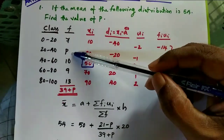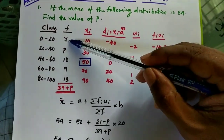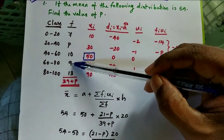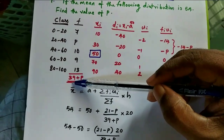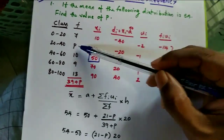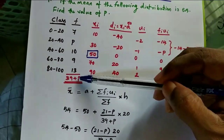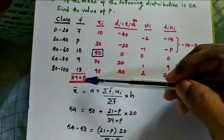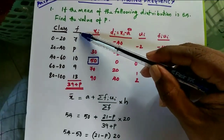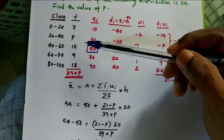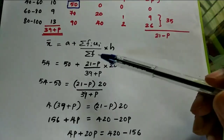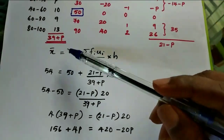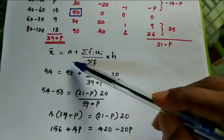We also add the frequencies: 7 plus 10 plus 9 plus 13 equals 39, and we have plus p, so sigma(f) equals 39 plus p.